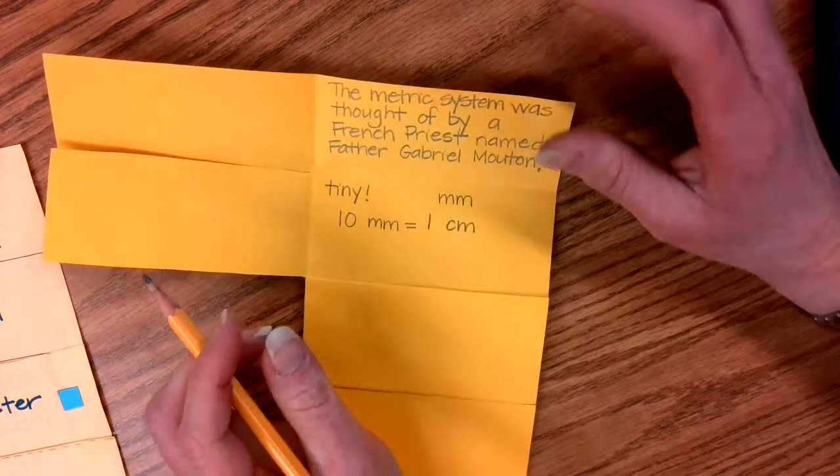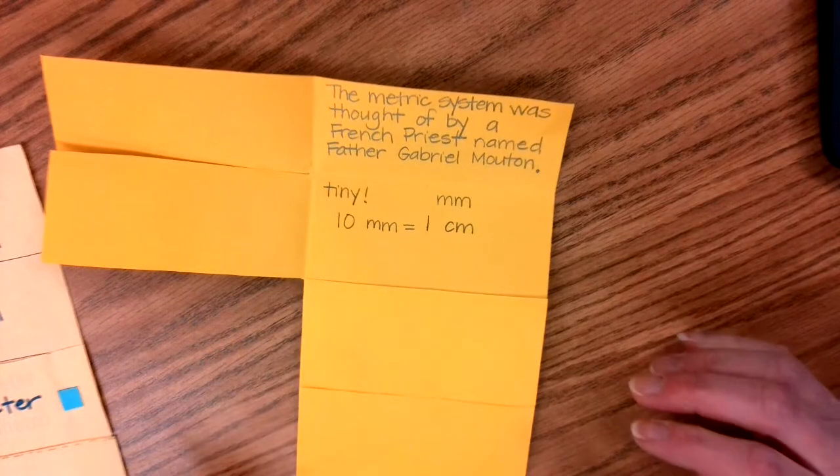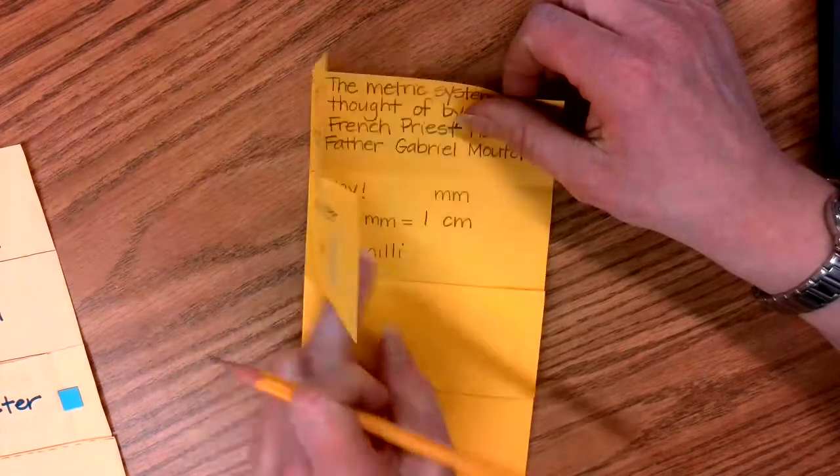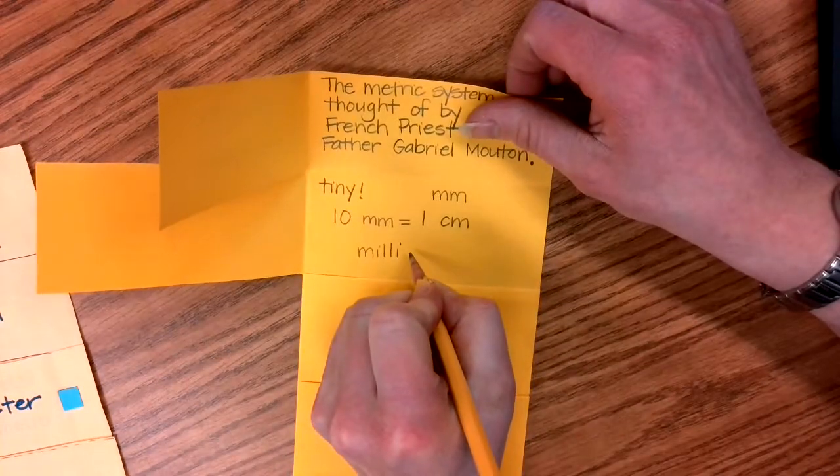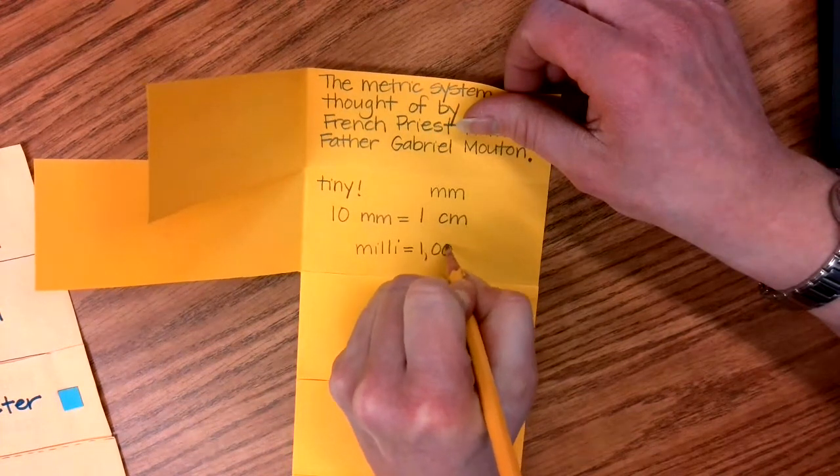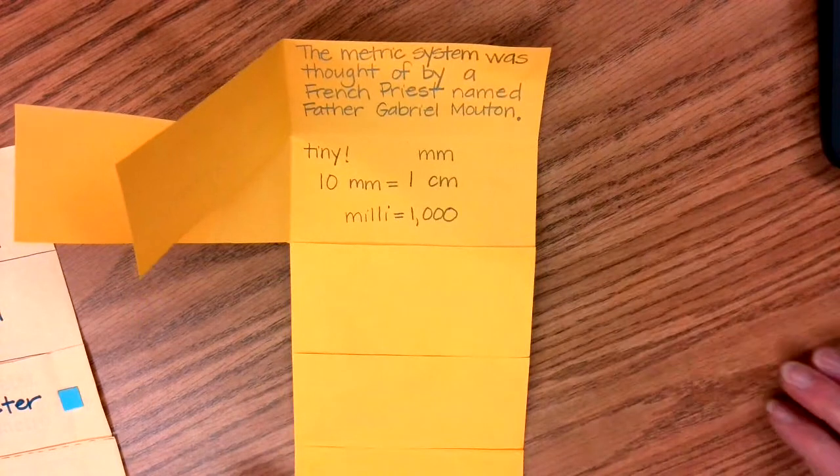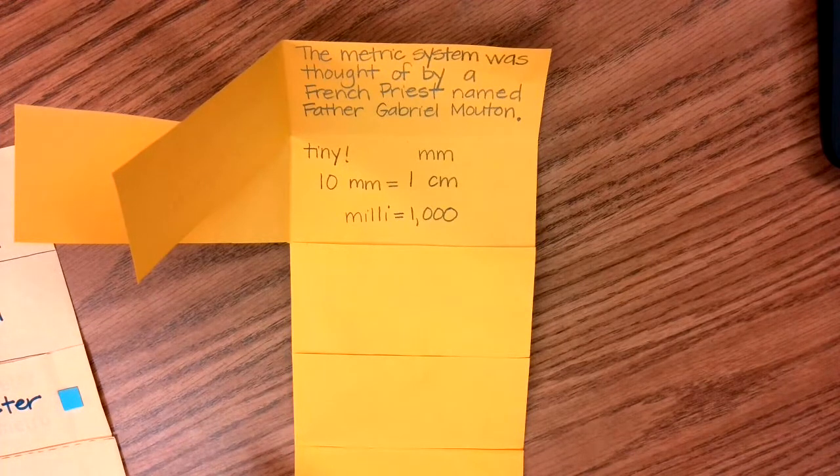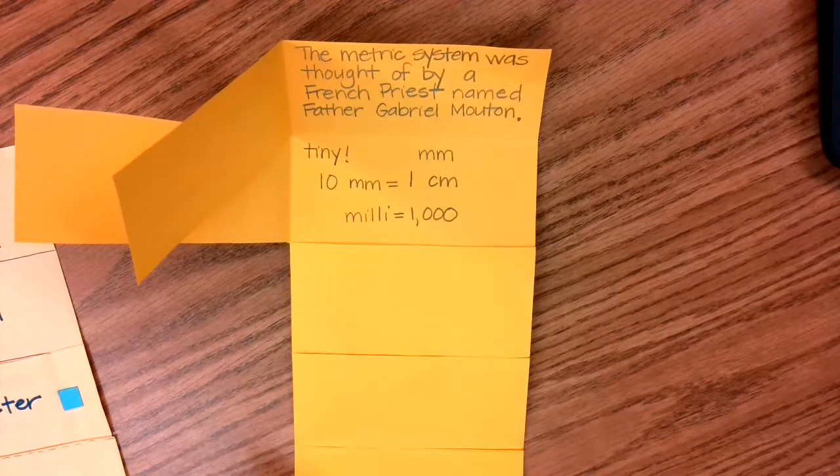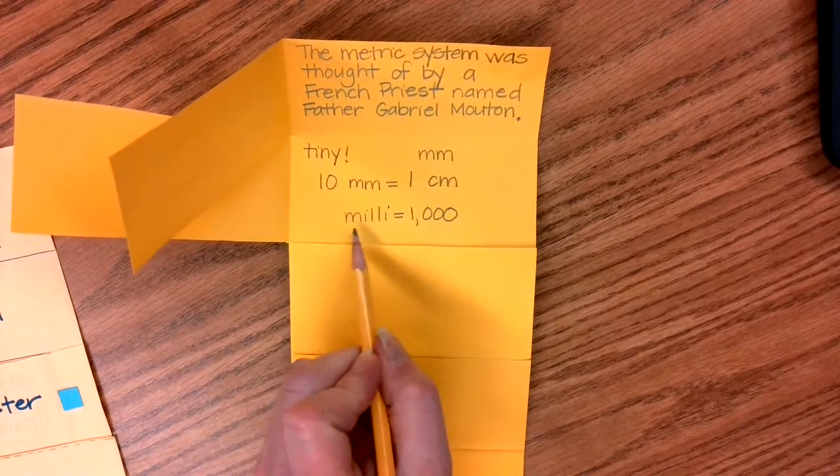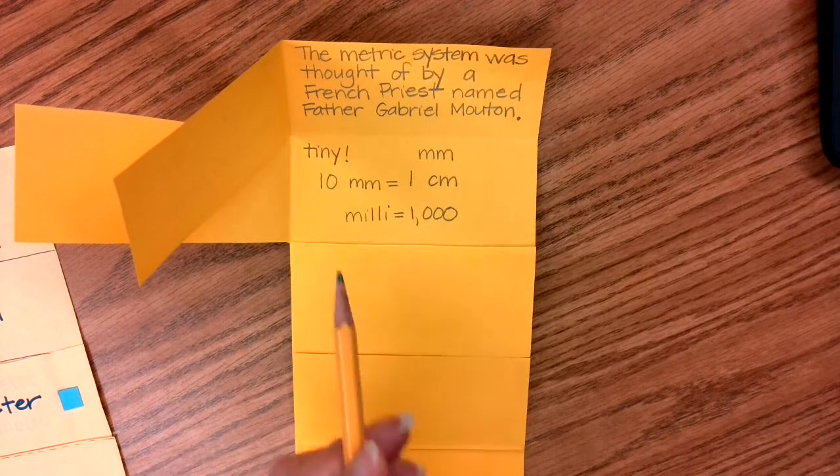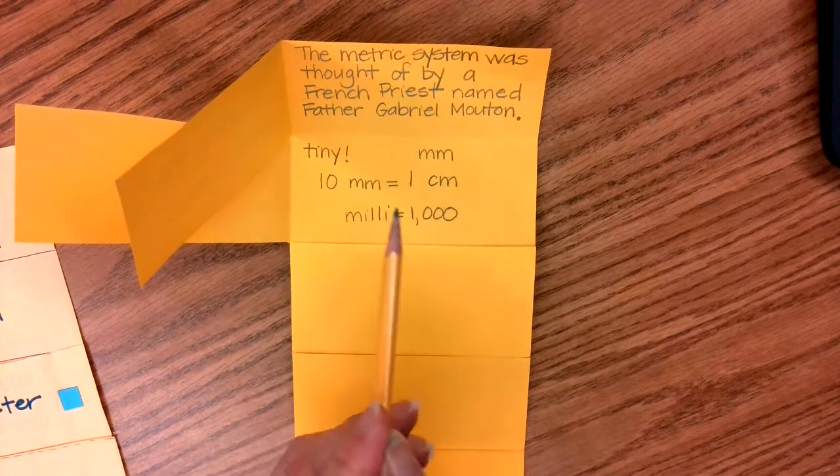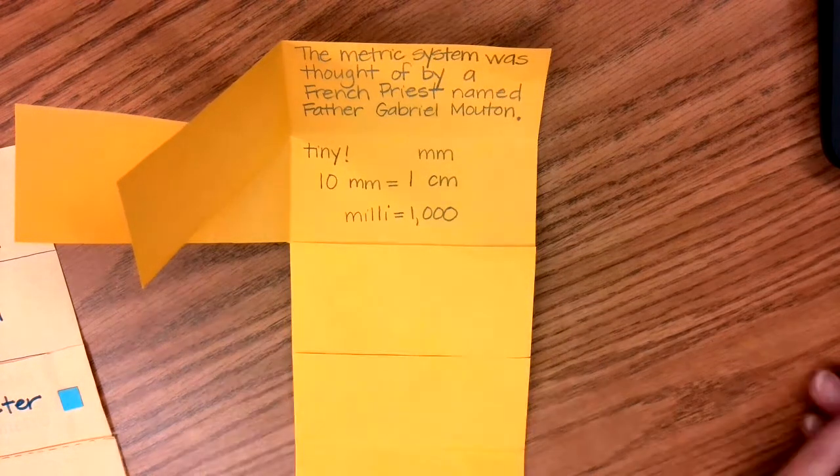Now the Latin root on millimeter is 'milli.' Okay, milli, milli stands for 1,000. Okay, because there are 1,000 millimeters in a meter, and we'll talk more about that in a minute. So milli, whenever you see like you know millipede the bug, okay millipede, milli means a thousand. So whenever you see milli, that means you're talking about a lot.